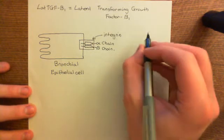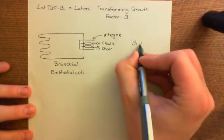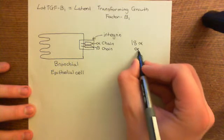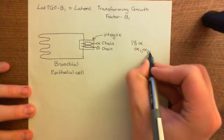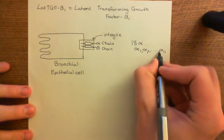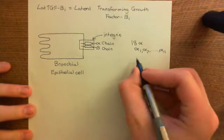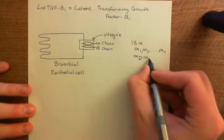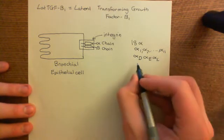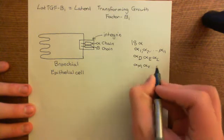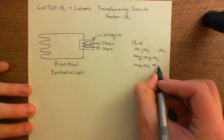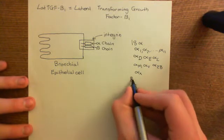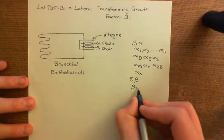There are 18 different alpha subunits. The first 11 are simply called alpha 1 through alpha 11. Then it gets more complex, using letters for the next seven: alpha D, alpha E, alpha L, alpha M, alpha V, alpha 2B, and alpha X. For beta subunits, there are 8, designated beta 1 through beta 8.